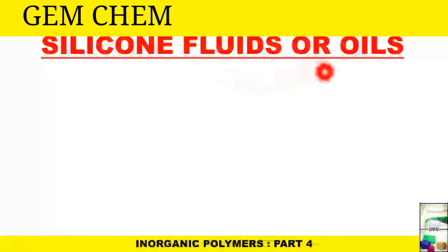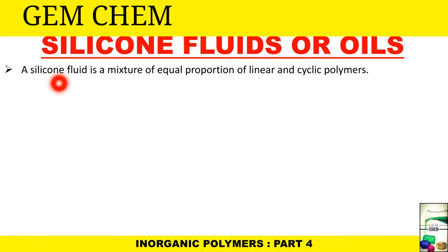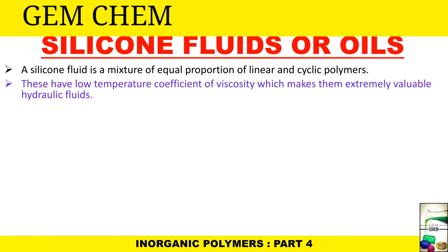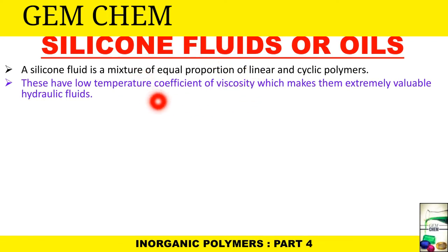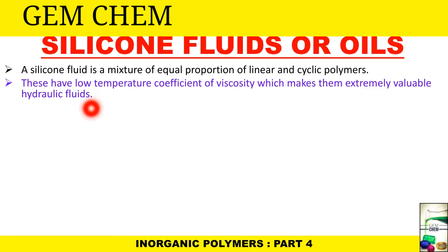One of the categories of silicones was silicon fluids or oils. A silicon fluid is a mixture of equal proportions of linear and cyclic polymers — we have already seen their preparation. These have a low temperature coefficient of viscosity, a term we have seen in the liquid state video. This property makes silicon fluids extremely valuable as hydraulic fluids. They also have good insulating property and high thermal stability.